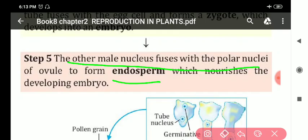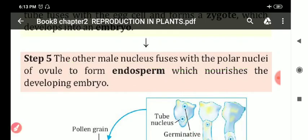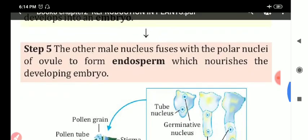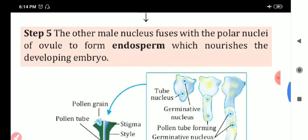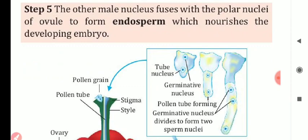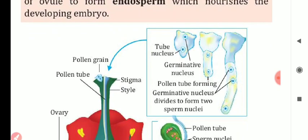In this process of fertilization, fusion of male gamete and female gamete takes place. First, the pollen grains come to the stigma, and the pollen tube germinates. There are two types of nucleus: tube nucleus and generative nucleus. The generative nucleus divides into two sperm nuclei, or two male nuclei.